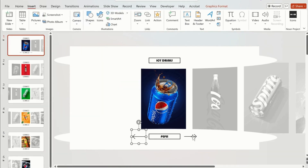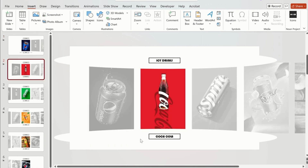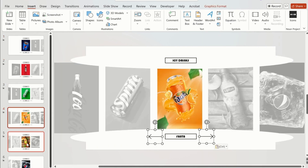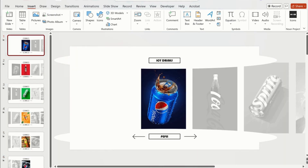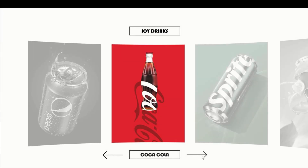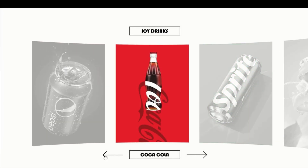Now copy both arrows using the Shift key and apply them to all other slides. This is how it looks in the Slide Show. When you click on the right arrow it will move to the right, and when you click on the left arrow it will move to the left.